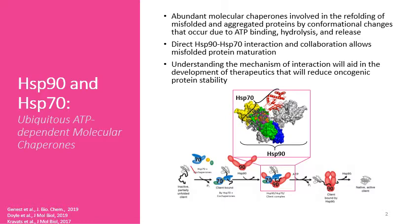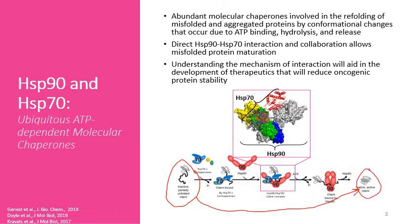Hsp70 and Hsp90 working together can move from inactive, partially unfolded client proteins to native active clients so these proteins can perform their actual duties.